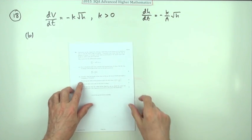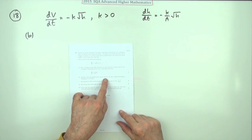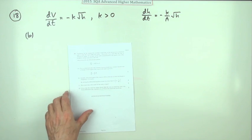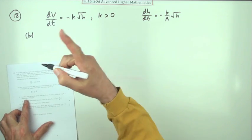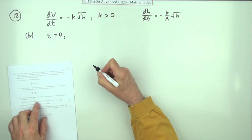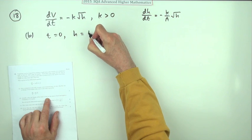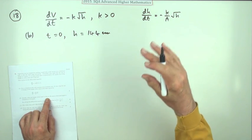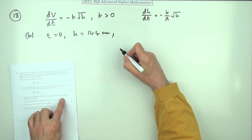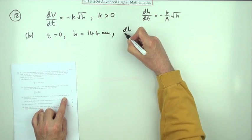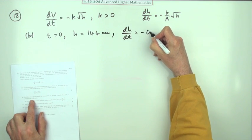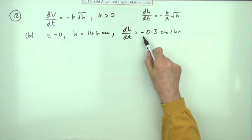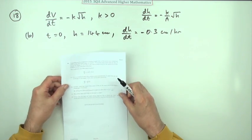Part b: initially when the height of the water was 144 the rate at which the height is changing is negative 0.3. What are some initial conditions? We may as well take a note of those. Initially means time equals zero and at time equals zero the height of the water is 144 so that must be the full height of the tank or the height of the water in the tank to begin with. And the rate of change at which the height is changing, that's dH by dt, is negative 0.3 centimeters per hour. Negative of course because the height is going down.